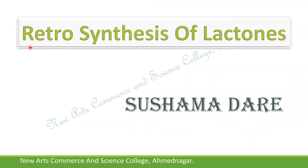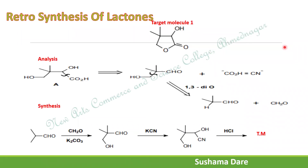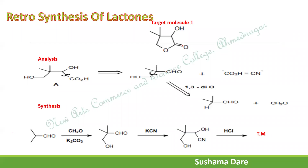In this video, I am going to share what strategy we have to follow if the lactone functional group is present, and what important factors we have to consider during the disconnection. The first target molecule is presented. We identify the functional groups: carbonyl, hydroxy, and carbon-oxygen. Because the carbonyl and carbon-oxygen are both present, we identify two relations: a lactone ring and an alpha-hydroxy carbonyl compound.